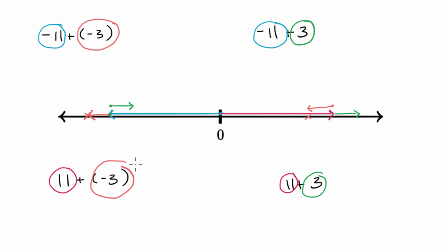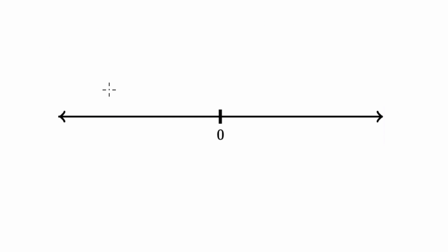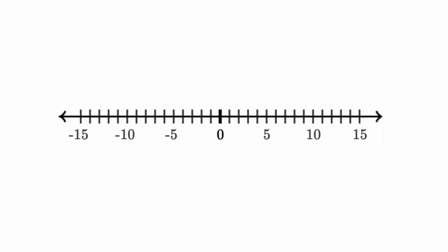Now what I'm going to do is tackle these exact same problems, but with a number line that actually has the numbers marked off, so we can actually compute what these are going to be. So let me delete all of this, and then let me mark these things off and do the same ones over again.